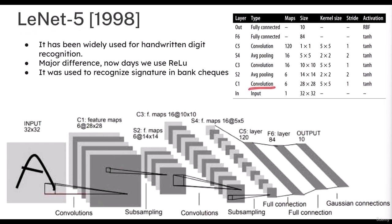LeNet-5 has a convolutional layer, then an average pooling layer, another convolution, then average pooling, convolution, and then a fully connected layer. At that time, people were using average pooling only — max pooling was not available. The ReLU activation function was also not available; the most famous activation function at that time was the tanh activation function.